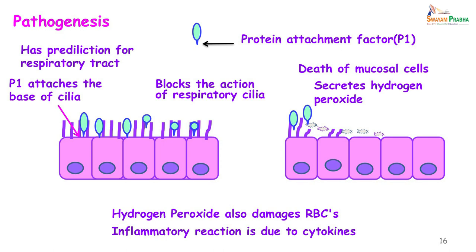Coming to the pathogenesis: the organism has a protein attachment factor P1. Mycoplasma have a predilection for the respiratory tract, so once they have been inhaled they will go into the respiratory tract and with the help of the P1 attachment factor they attach to the base of the cilia. Following this they block the action of the respiratory cilia. The cilia get destroyed and they secrete hydrogen peroxide. This hydrogen peroxide causes damage to the mucosal cells; the mucosal cells ultimately die and the organism goes deeper into the tissue. The hydrogen peroxide produced causes lysis of red blood cells and an inflammatory reaction is produced because of cytokines.